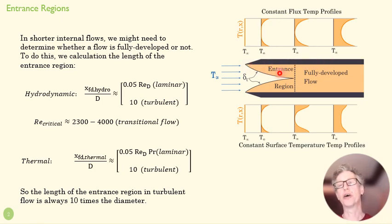You're still going to get a point where those boundary layers from opposing sides of that internal flow meet with each other. After those boundary layers meet with each other, we call that fully developed flow.